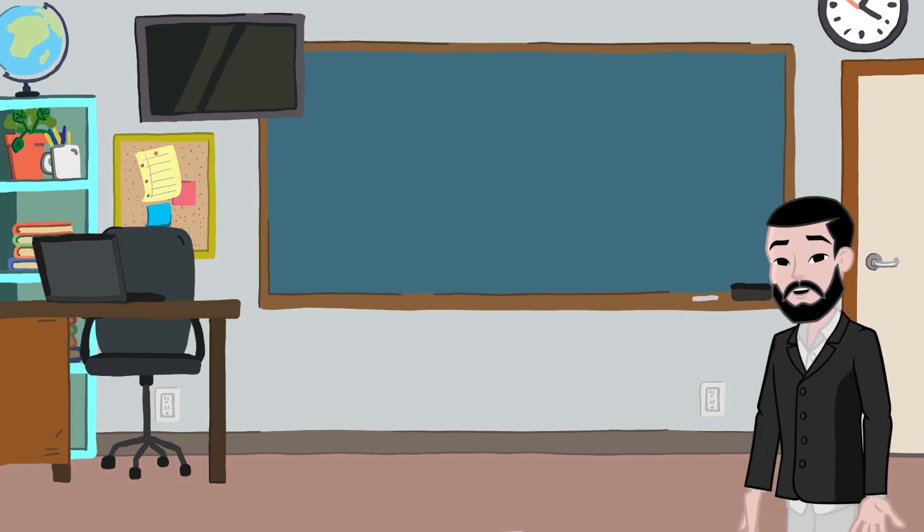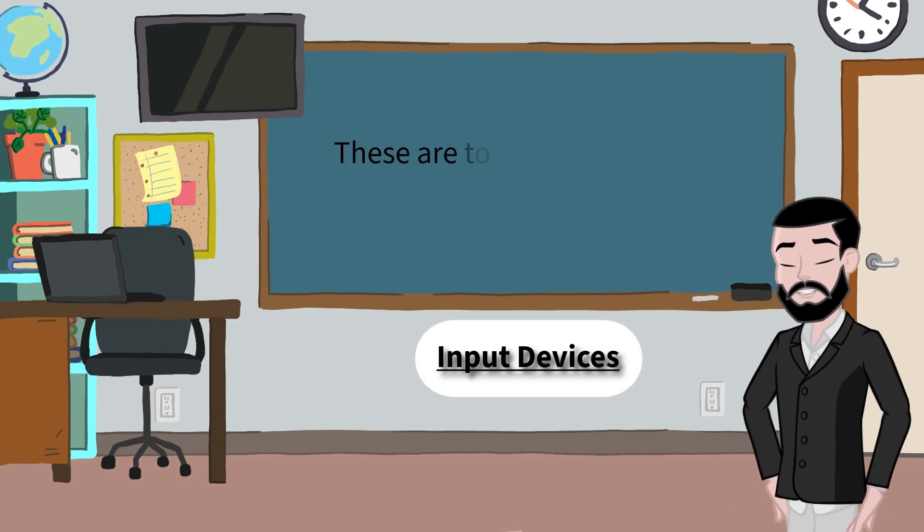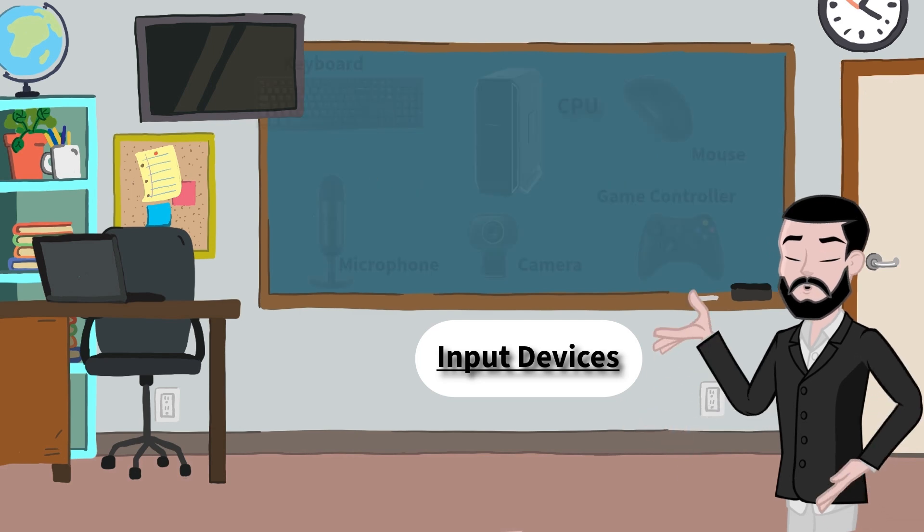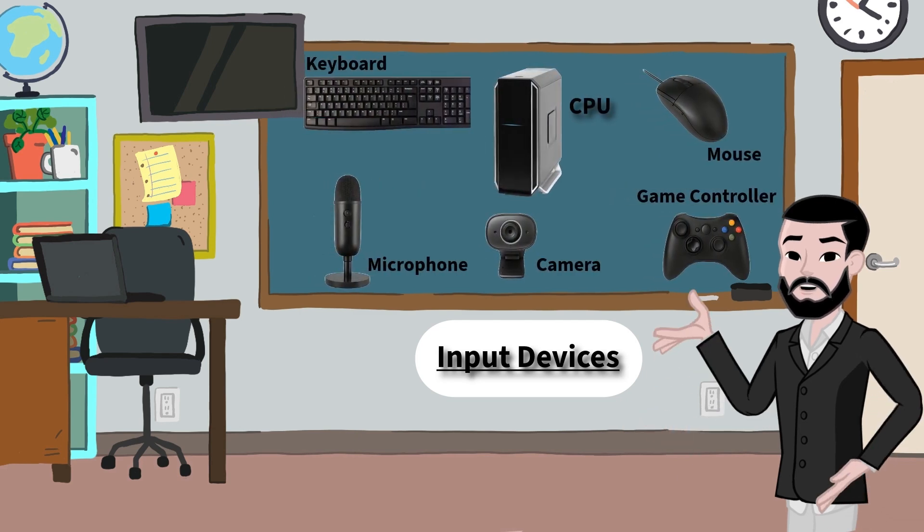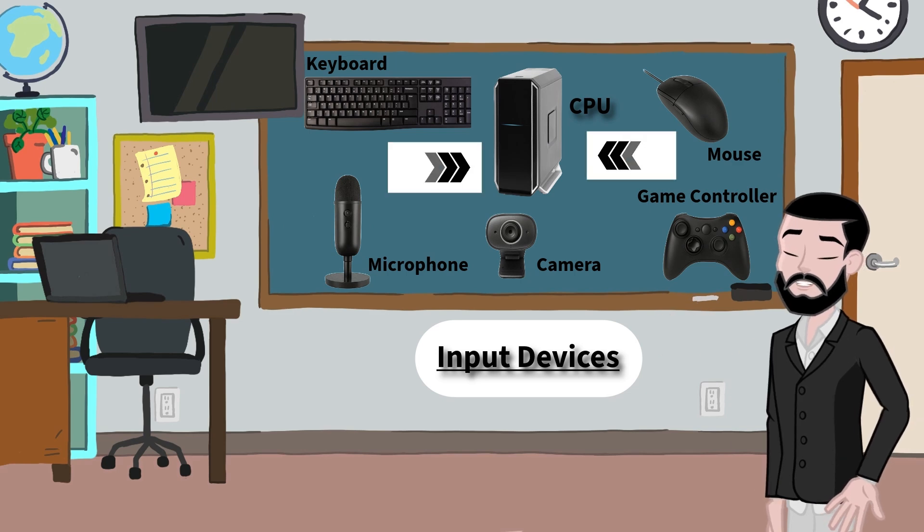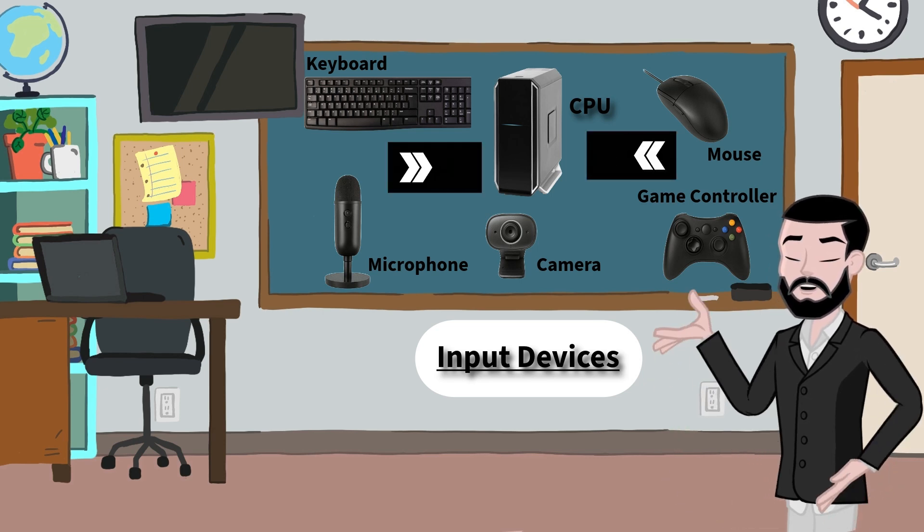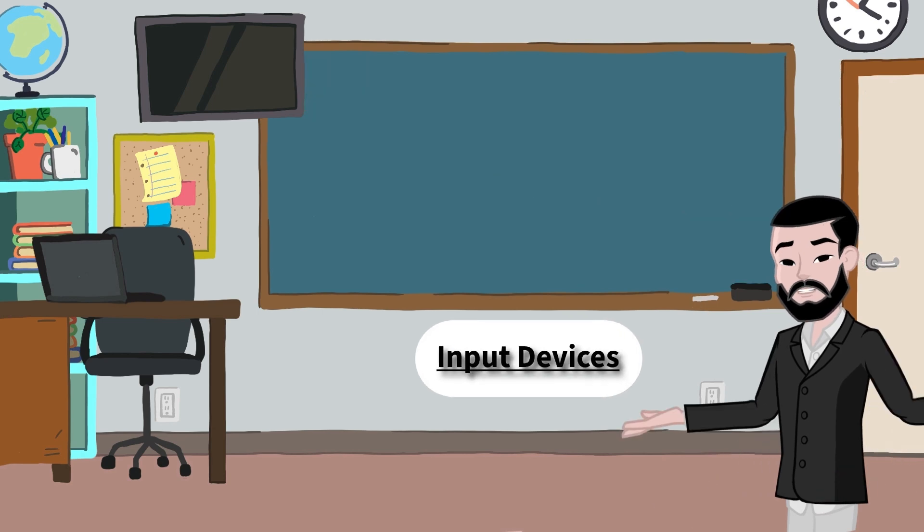Let's start with input devices. These are tools we use to send information to the computer. That means when we want to type, click, draw, speak, or play a game, we use input devices to give instructions to the computer. Without them, the computer wouldn't know what we want it to do.